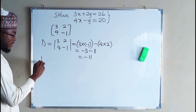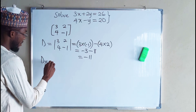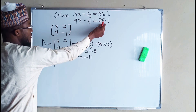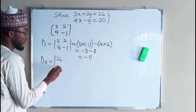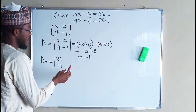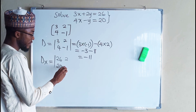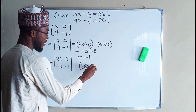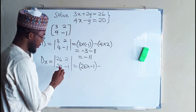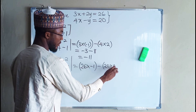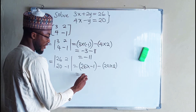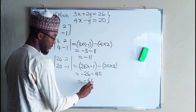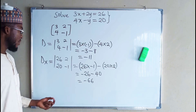We need to find the determinant with respect to x. To find Dx, you replace the coefficient of x with the constant terms. The constant terms are 26 and 20, and you keep the coefficient of y. This gives us 26 multiplied by negative 1, minus 20 times 2, which is negative 26 minus 40, giving us negative 66. This is the determinant with respect to x.